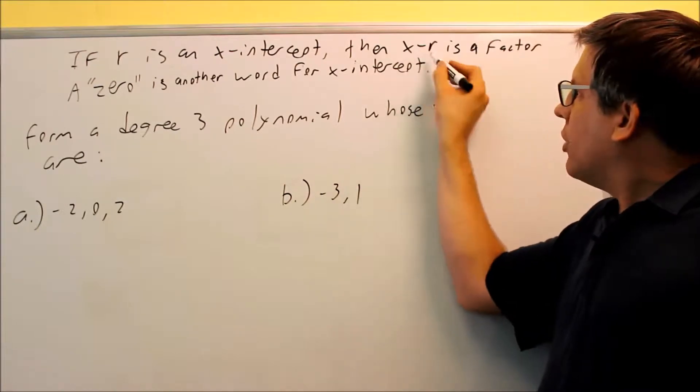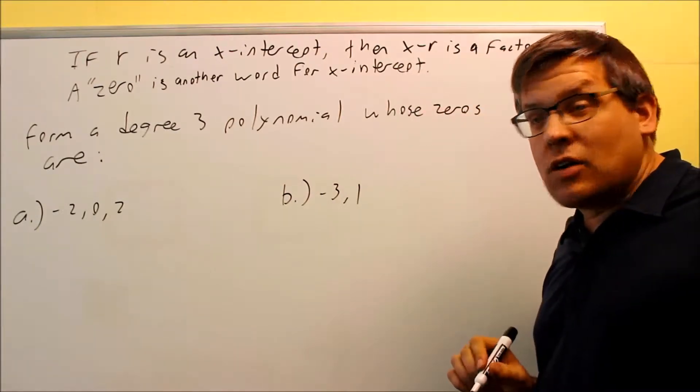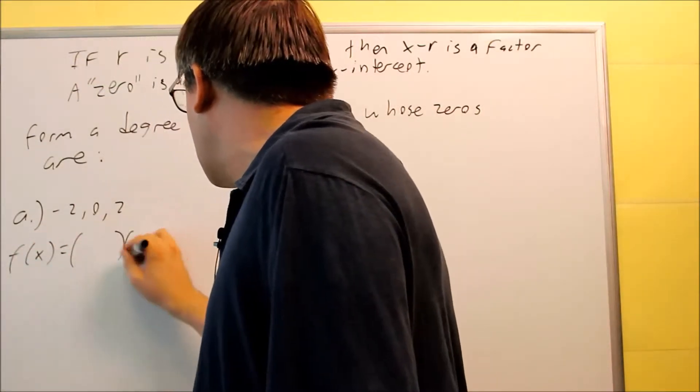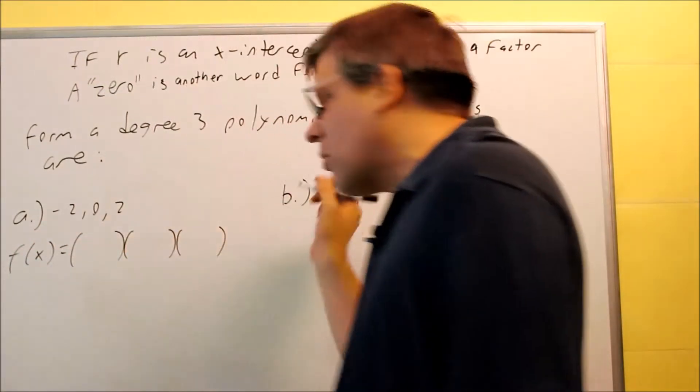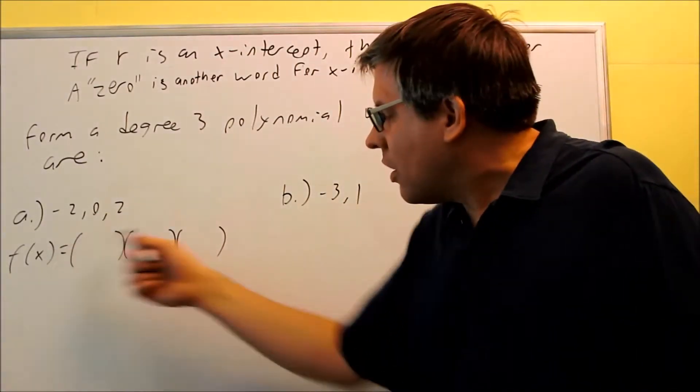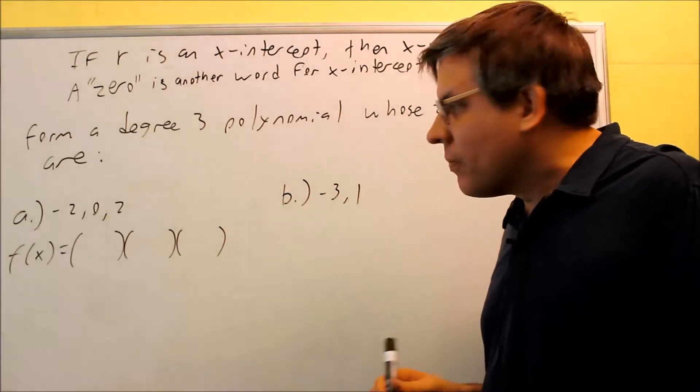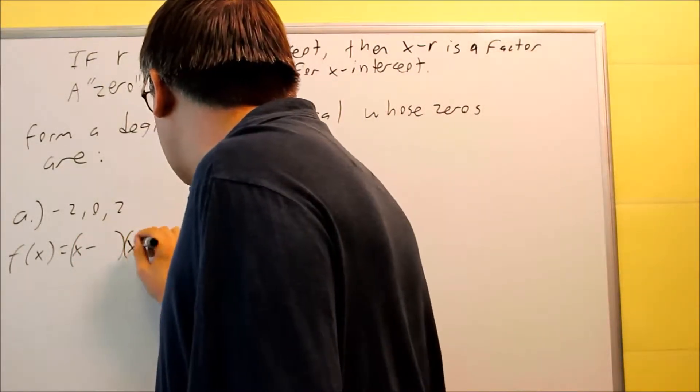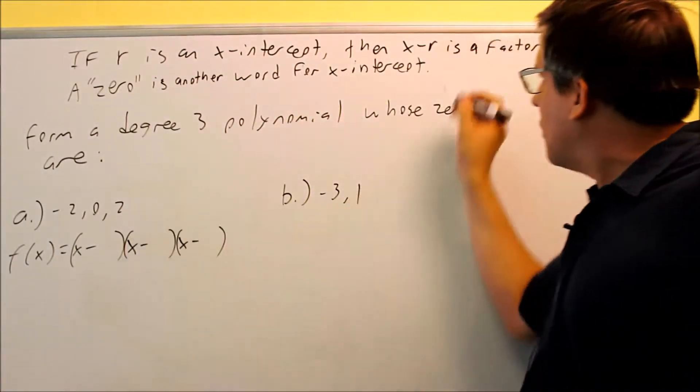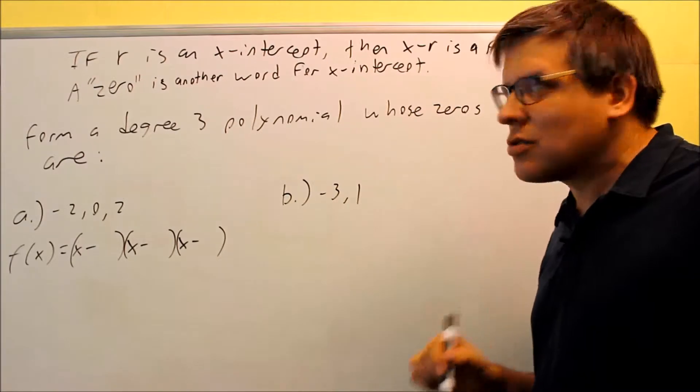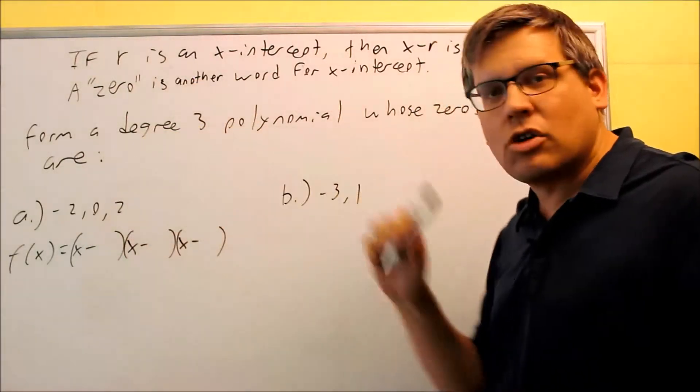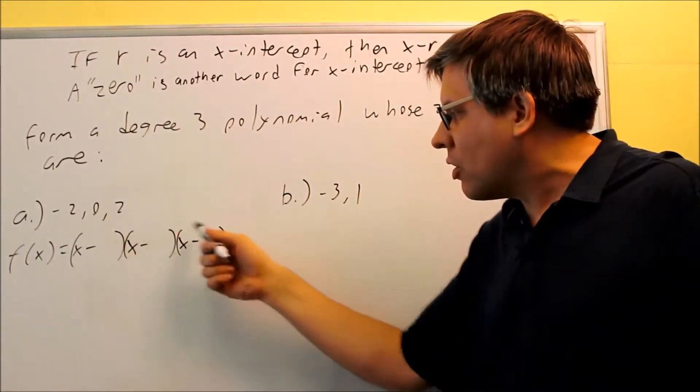The formula for doing that is you need to do x minus r. So first what I'll do is I'll put f of x, and you can name it anything you want, but I'll put f of x, something there to name my polynomial. And then each of these, I'm going to put x minus in each of these. I'm putting x minus because the formula that we've got to use is x minus whatever the x-intercept is. Here's the x-intercepts. They gave you negative 2, 0, and 2. I'm just going to put those in.